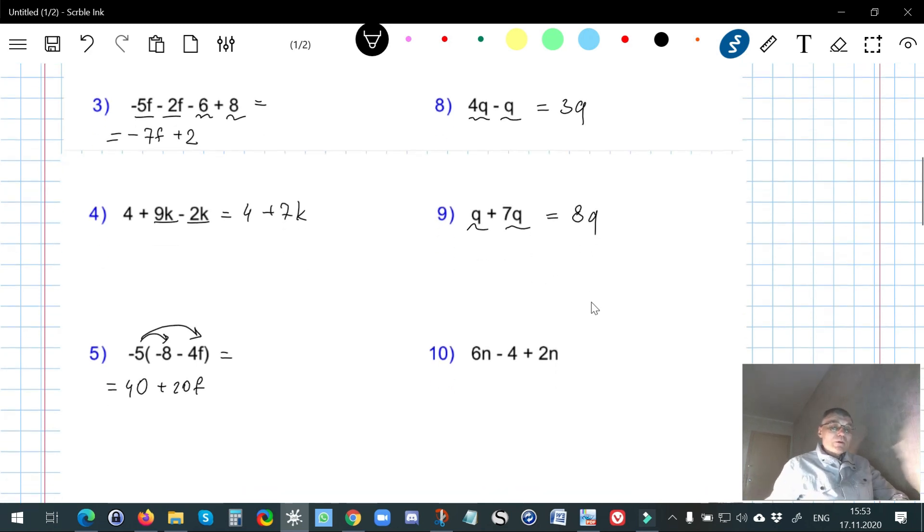And here again the last problem, I just combine the like terms. 6 plus 2 is 8, don't forget about n. 8n minus 4, that's it.